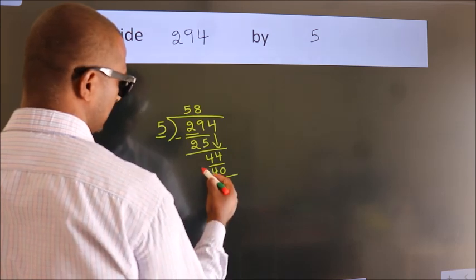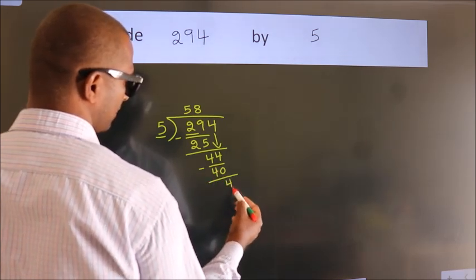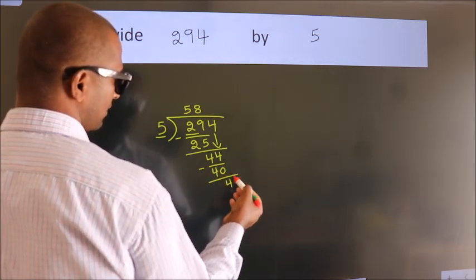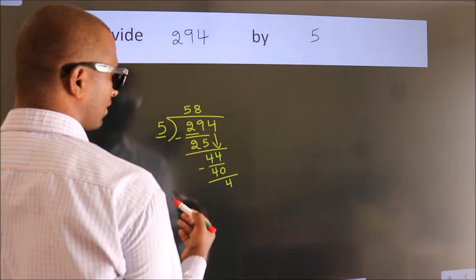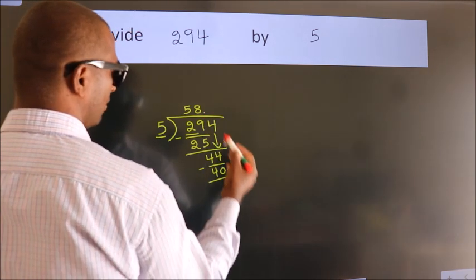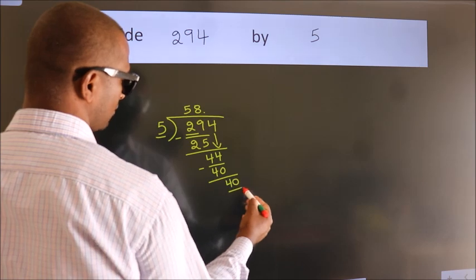Now we subtract. We get 4. After this, no more numbers to bring it down. So what we do is we put a dot and take 0. So 40.